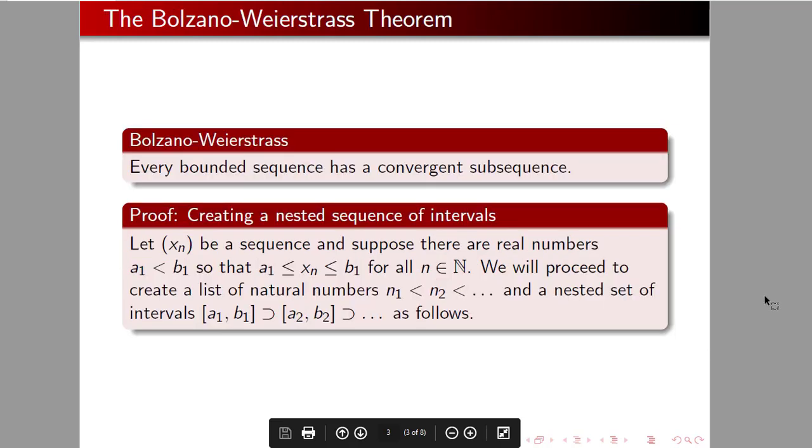The Bolzano-Weierstrass theorem says that every bounded sequence has a convergent subsequence. So we can easily think of sequences that are bounded and don't converge. This says that we can thin any bounded sequence down to something that converges.